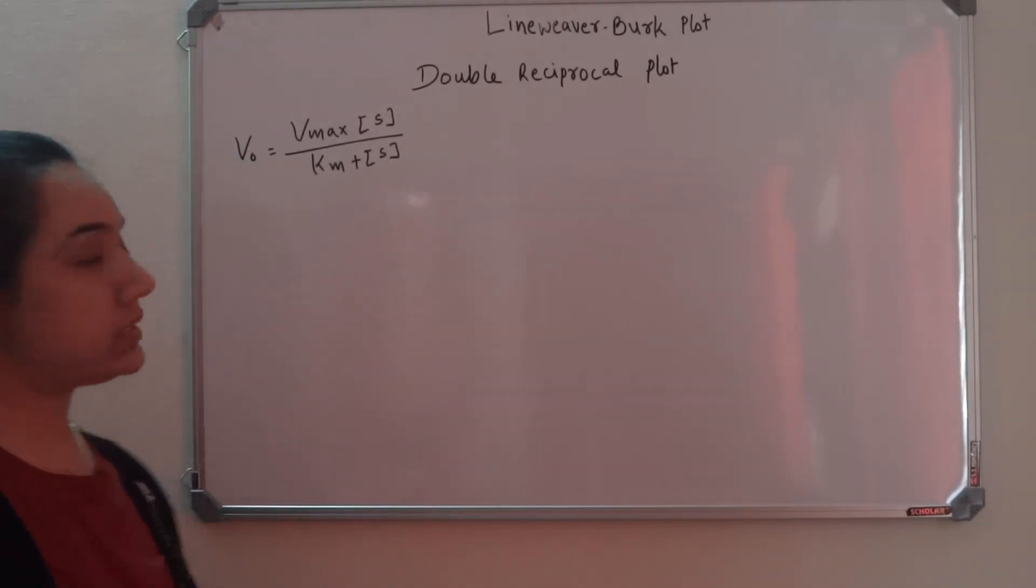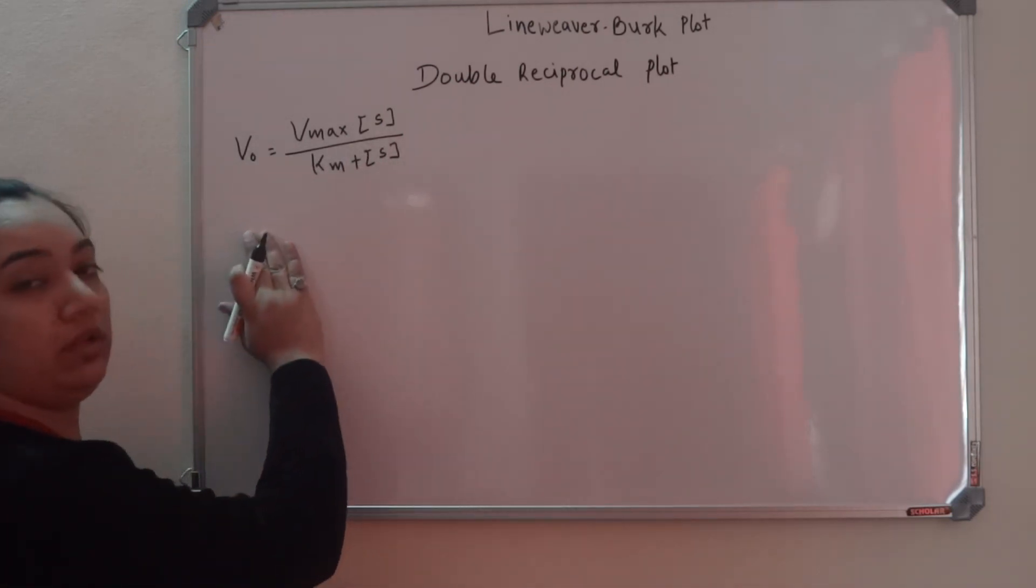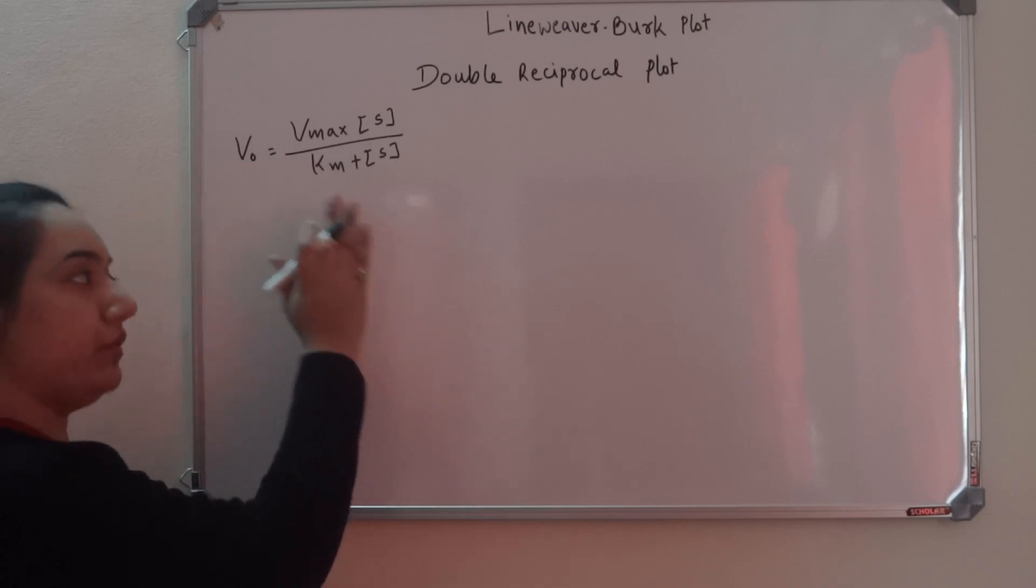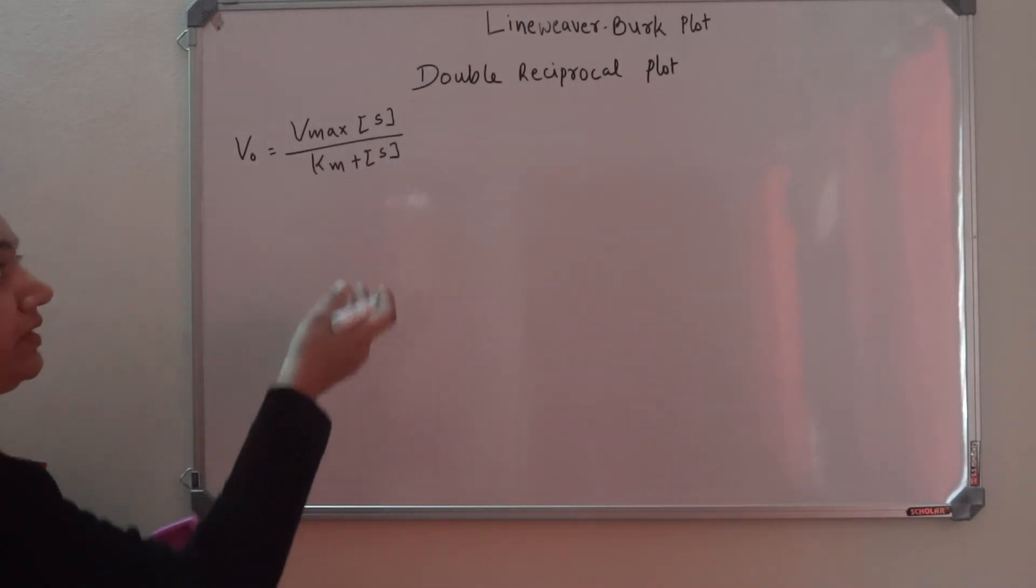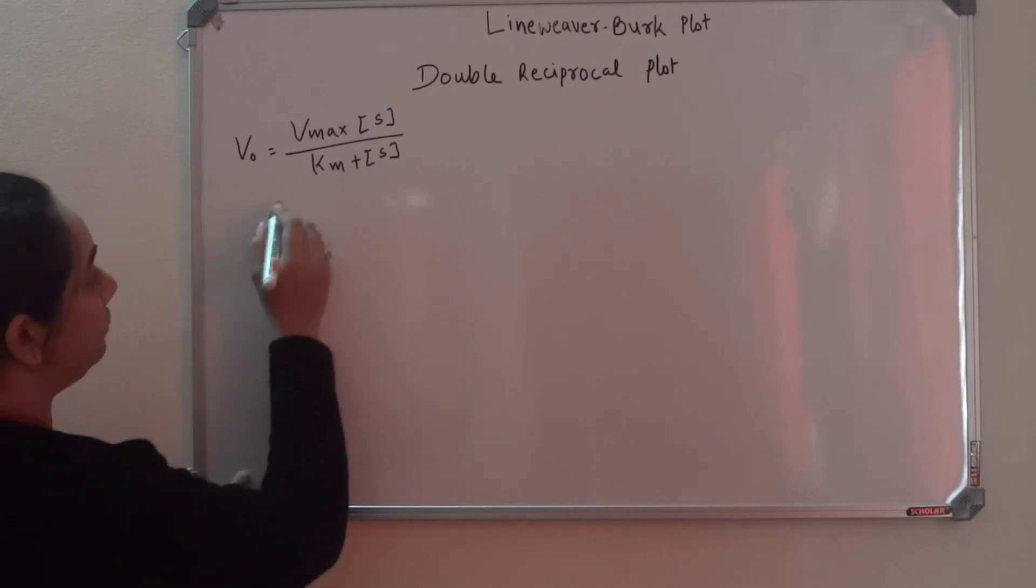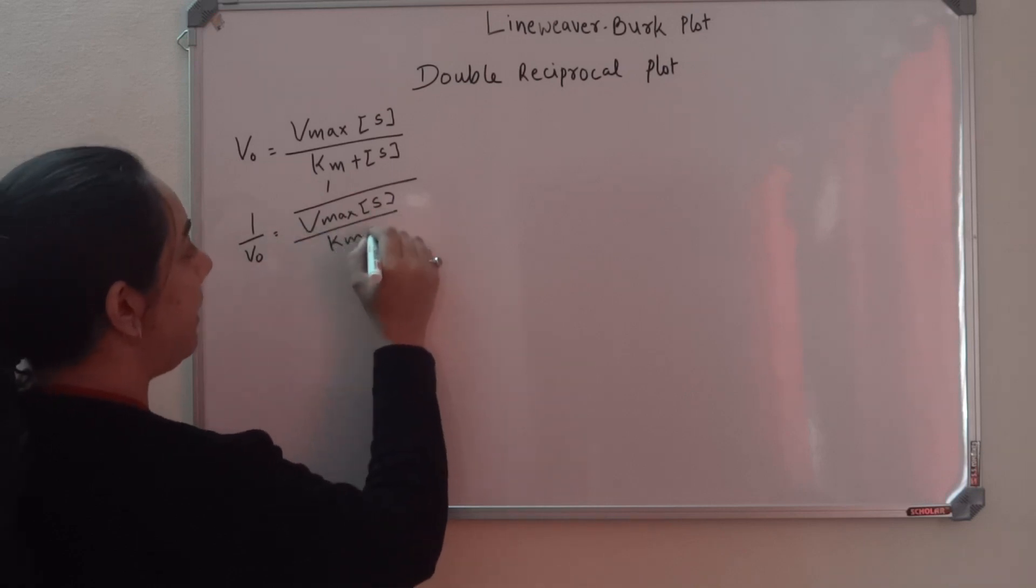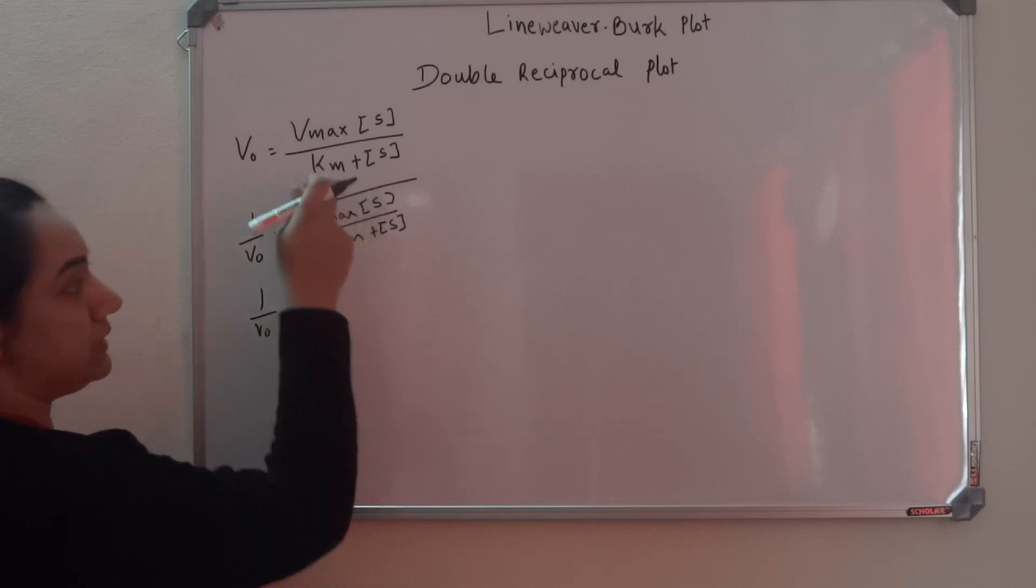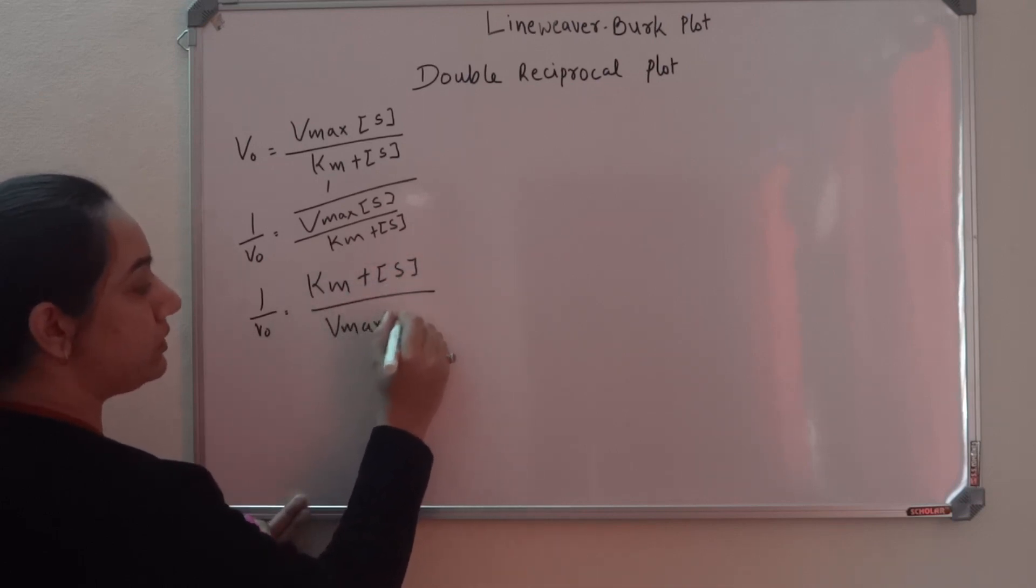To convert this MM equation into the Lineweaver-Burk equation, we need to take the reciprocal of this equation on both sides - right hand side and left hand side. That's also called the double reciprocal plot. So we'll get 1 by V0 equals 1 by the whole thing: Vmax into S divided by Km plus substrate concentration. Since this is 1 by, the whole thing will flip: Km plus substrate concentration divided by Vmax into S.